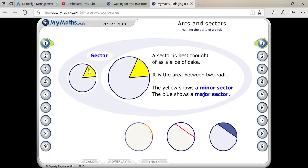If you take one part of that pizza, that is also known as a sector. Whatever yellow portion you are seeing, that is your minor sector. Whatever remaining part you are seeing, that is your major sector.